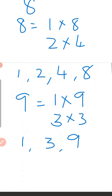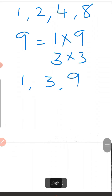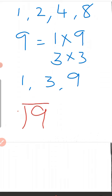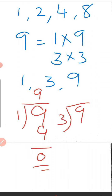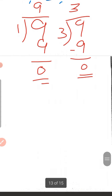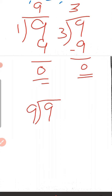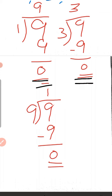Now let us check the factors of 9 using division. Divide 9 by 1: quotient 9, remainder 0. Divide 9 by 3: quotient 3, and 3 times 3 equals 9, remainder 0. Divide 9 by 9: quotient 1, remainder 0. When we divide the given number by its factors, the remainders are 0. So we can confirm that 1, 3, and 9 are factors of 9.